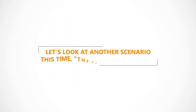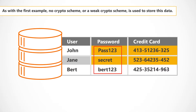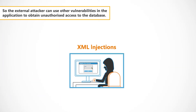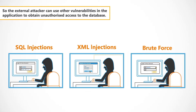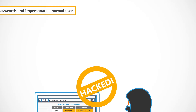Let's look at another scenario, this time the external attacker. Again, the database contains sensitive user information, such as passwords, to protect accounts. As with the first example, no crypto scheme or a weak crypto scheme is used to store this data. So the external attacker can use other vulnerabilities in the application to obtain unauthorised access to the database. Now, the attacker can steal usernames and passwords and impersonate a normal user.